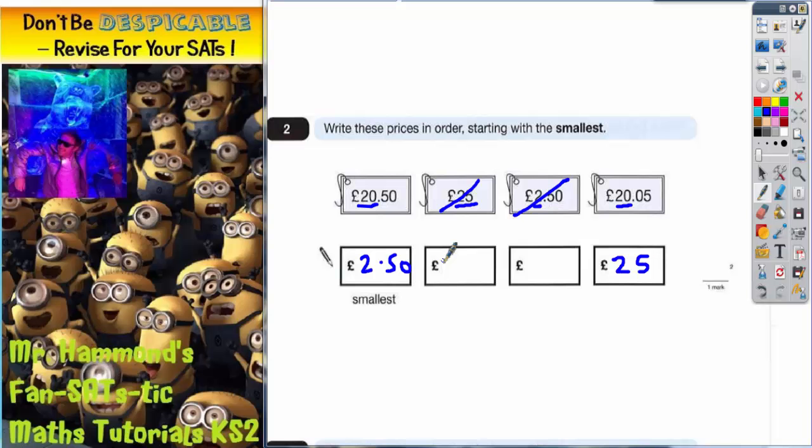So the next smallest one needs to be £20 and 5 pence, and cross that one off. Only one left has to go in this box, £20 and 50 pence. Job done.